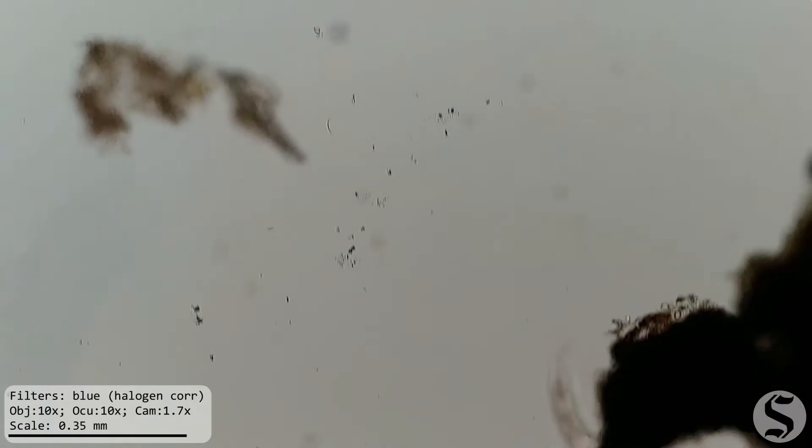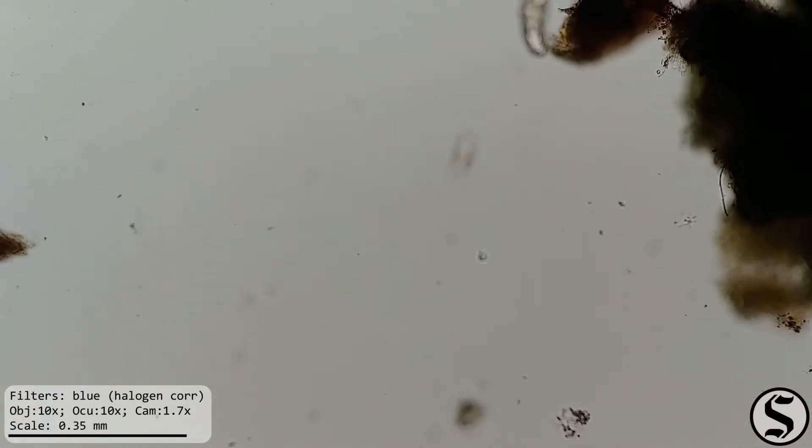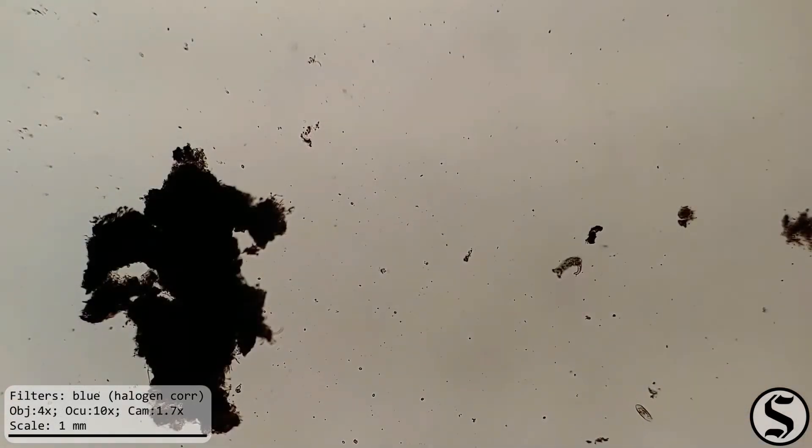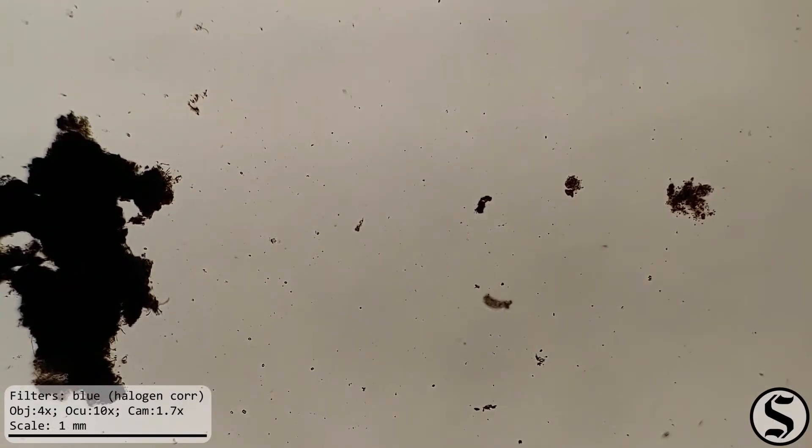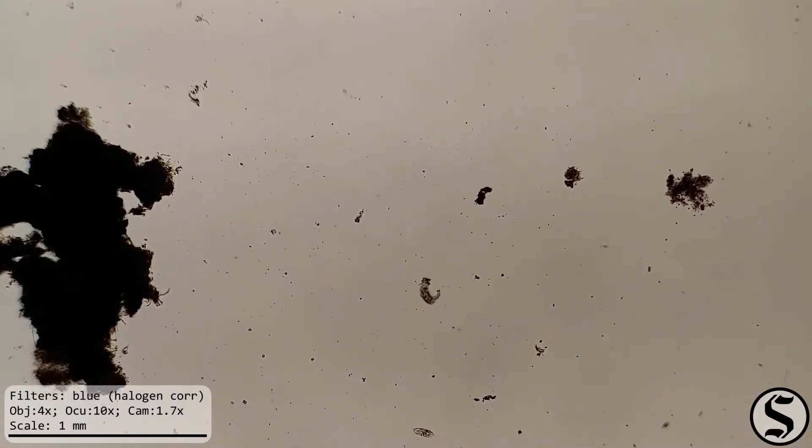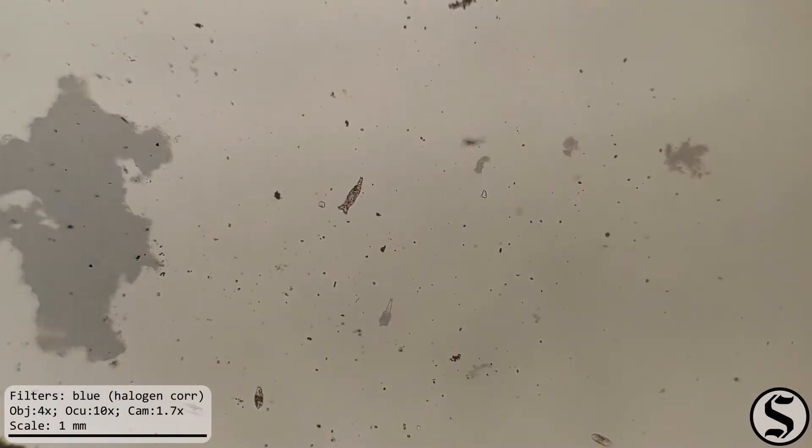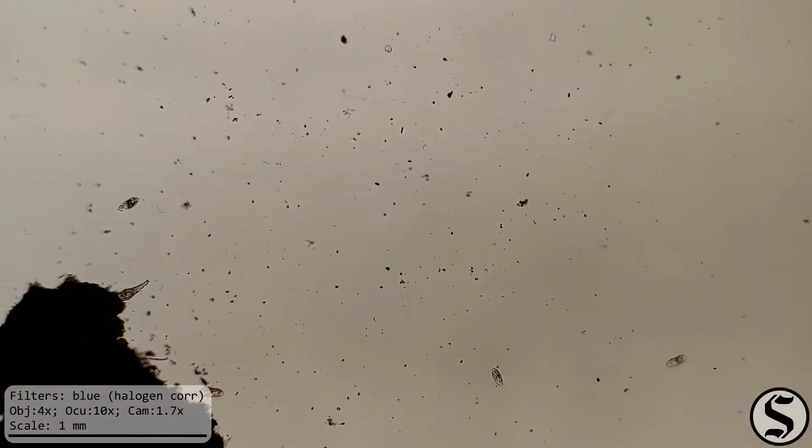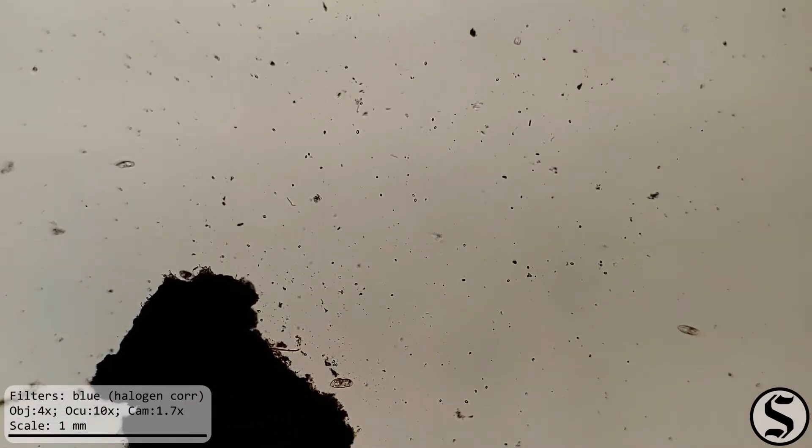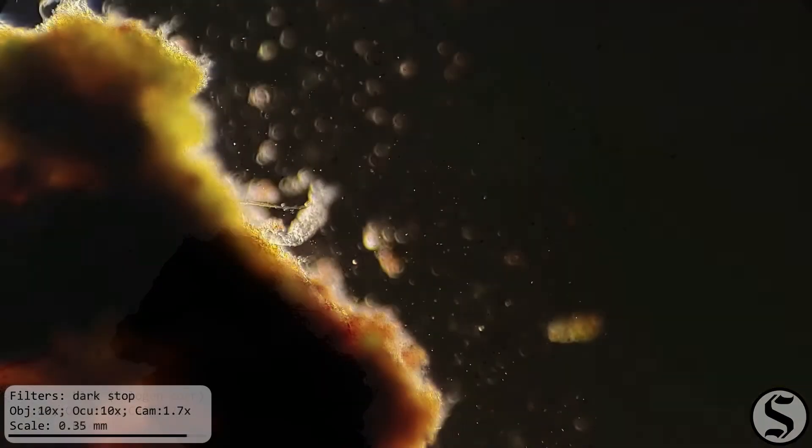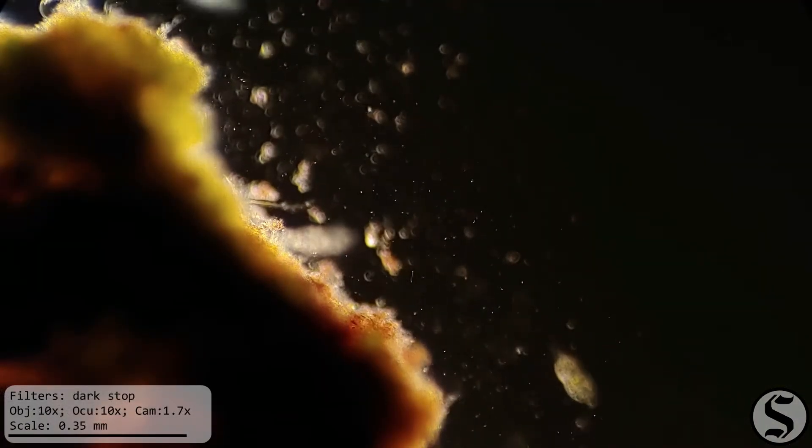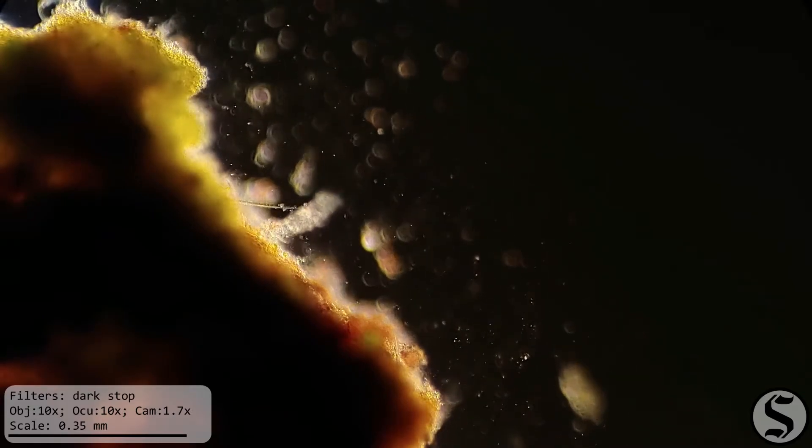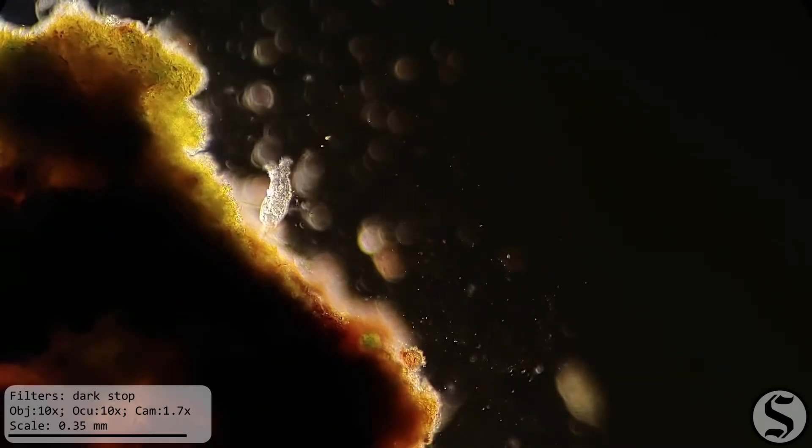So I filmed him for a while. He kept launching himself off of substrates and twirling and swirling. Eventually he did land on another substrate and stayed still for long enough for me to get another look at him. I decided to use some dark field. It really shows off how much his cilia get the water moving. You can really see all those particulates swirling around.